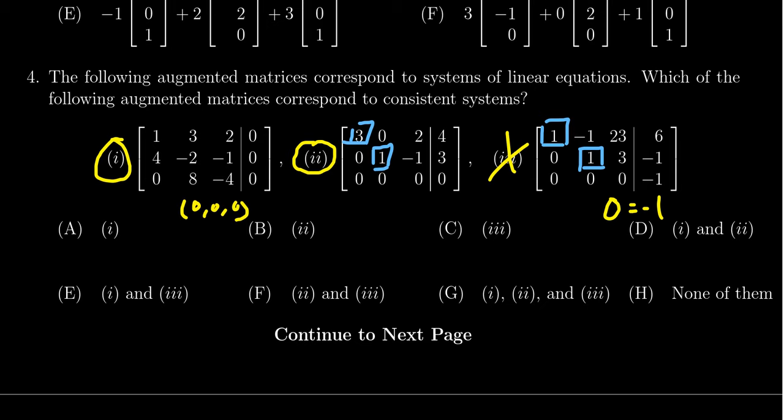And so choice one and choice two are, in fact, consistent. Choice three is not. So we look for that option that is one and two, and that's going to be choice D right here. So D is the correct answer.